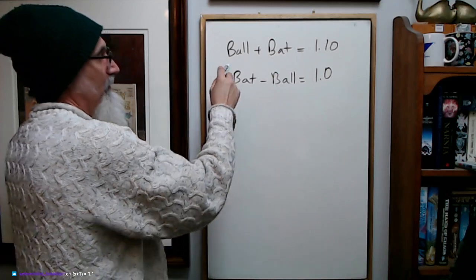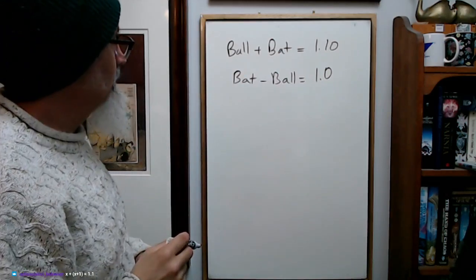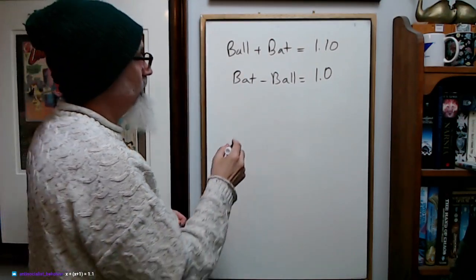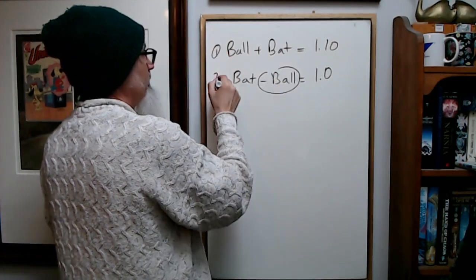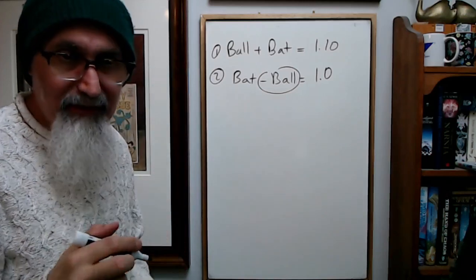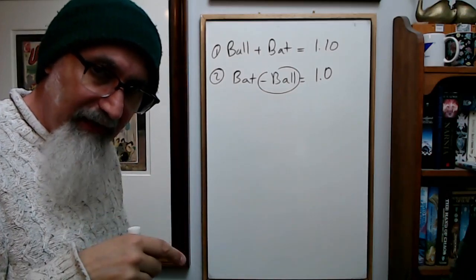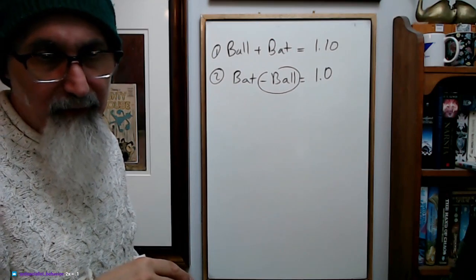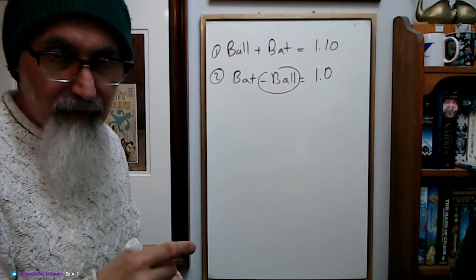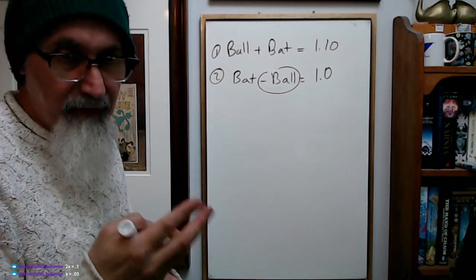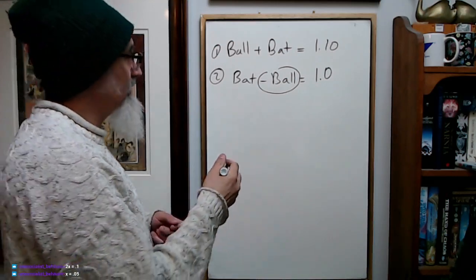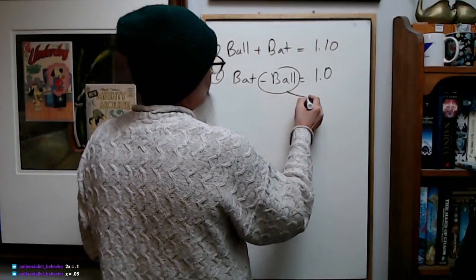So all you got to do is substitute. This is your first equation, this is your second equation. Always remember: the number of variables you have, that's how many equations you need to solve a problem. If you have one unknown, you need one equation. Two unknowns, you need two equations. Three unknowns, three equations, et cetera.